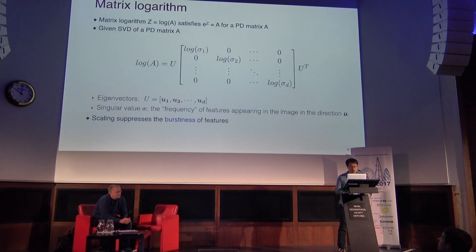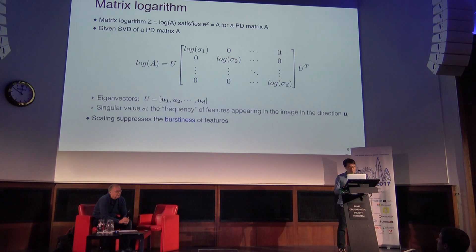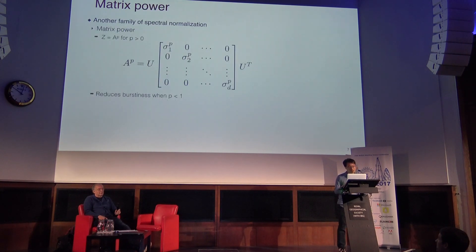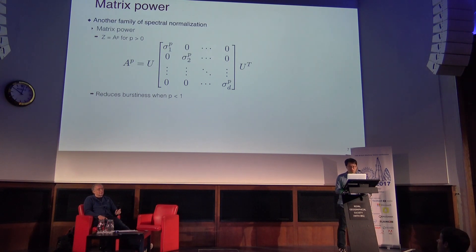Matrix logarithm is defined as the inverse function of matrix exponential. To compute the matrix logarithm, the straightforward method uses SVD decomposition and applies the scalar log on its eigenvalues. If you think of eigenvalues as the frequency of a feature appearing in the direction of the corresponding eigenvectors, the matrix logarithm suppresses the eigenvalues with a similar effect as the signed square root, which suppresses dominant feature elements. Following this intuition, we can consider another family of spectral normalization: the power of the matrix. To compute the matrix power, we simply compute the power of the eigenvalues, and when the power is smaller than 1, it has a similar suppressing effect on dominant feature directions.